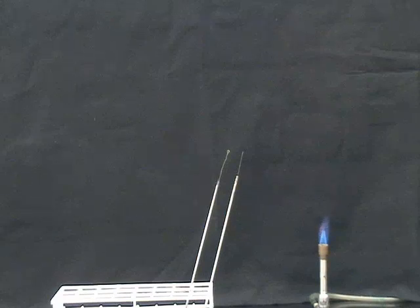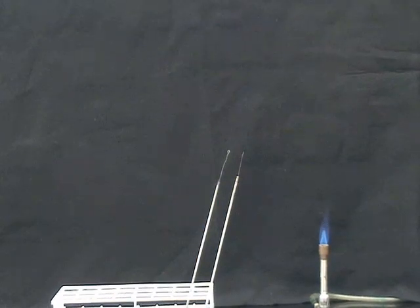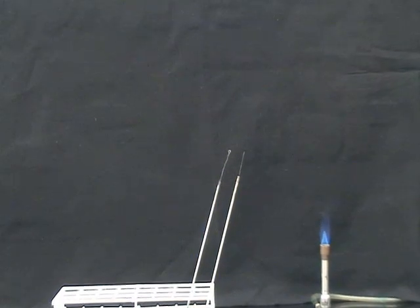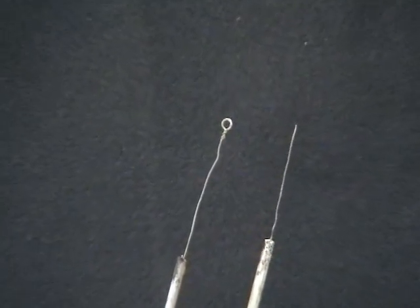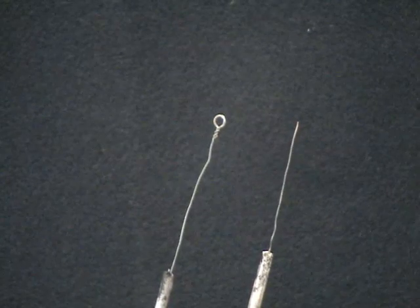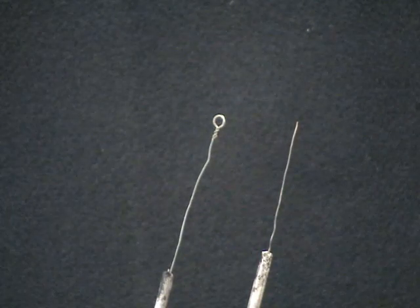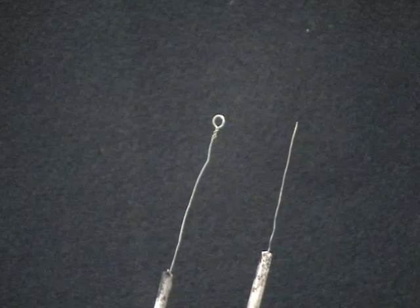An inoculating loop, shown here on the left, is a bit of wire, often platinum or iron, that is bent to form a loop at the end. Dipping a loop in a solution will cause a small volume of liquid to cling to the loop, and this can be moved from item to item without cross-contamination.